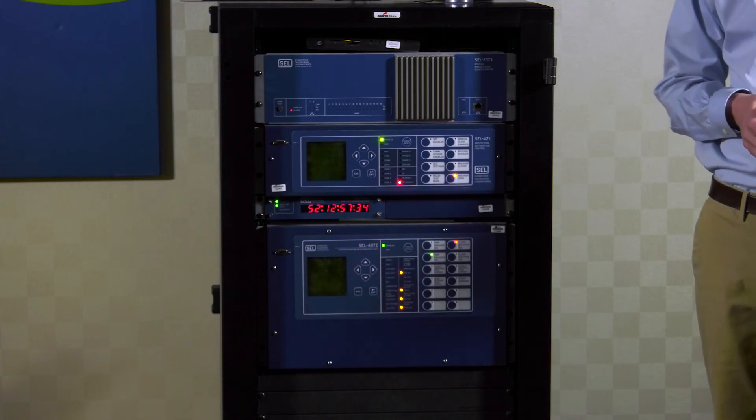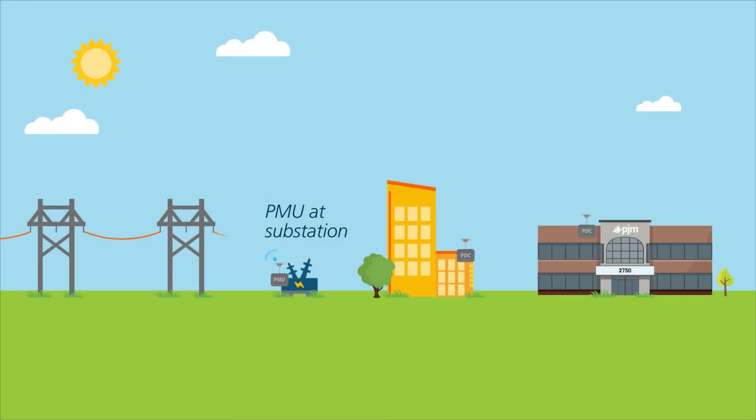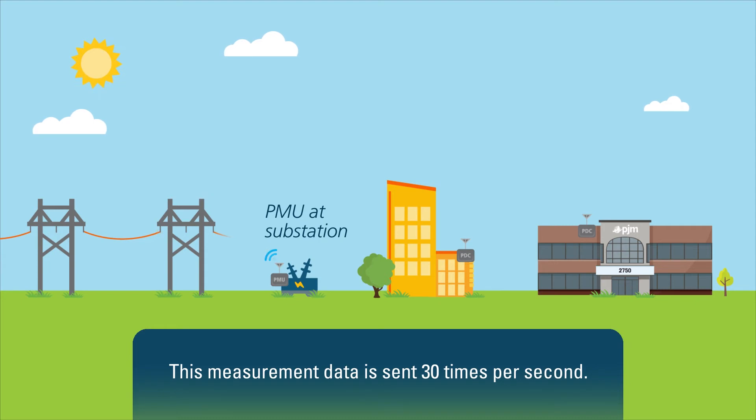This measurement data from these PMUs are then sent to a central device called a phaser data concentrator or a PDC. The PDC then sends its information to a local utility company who sends the information to PJM.